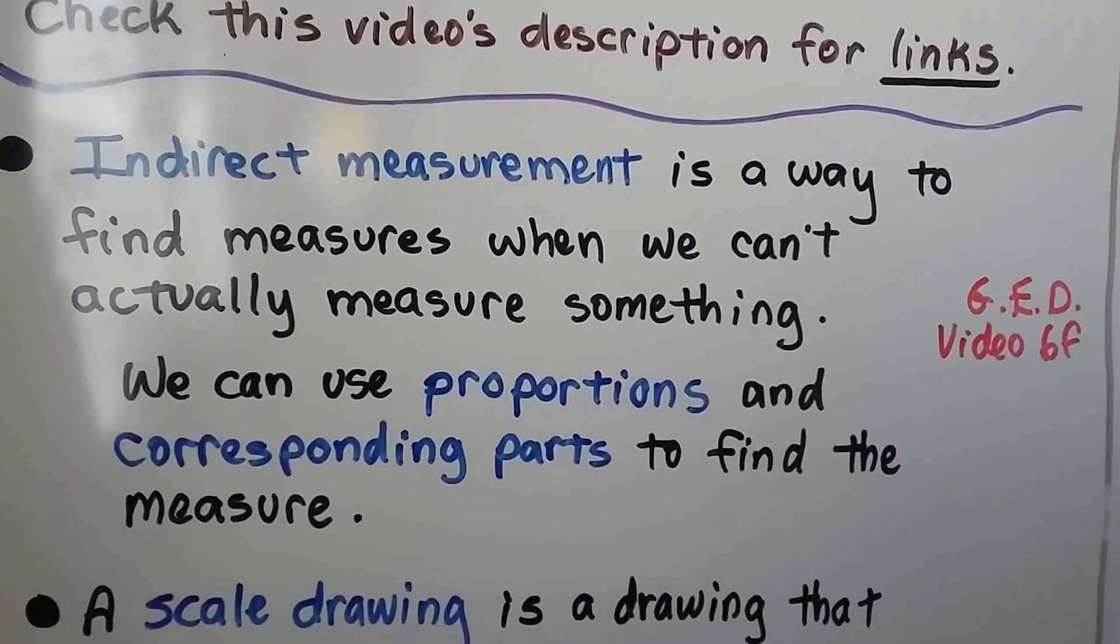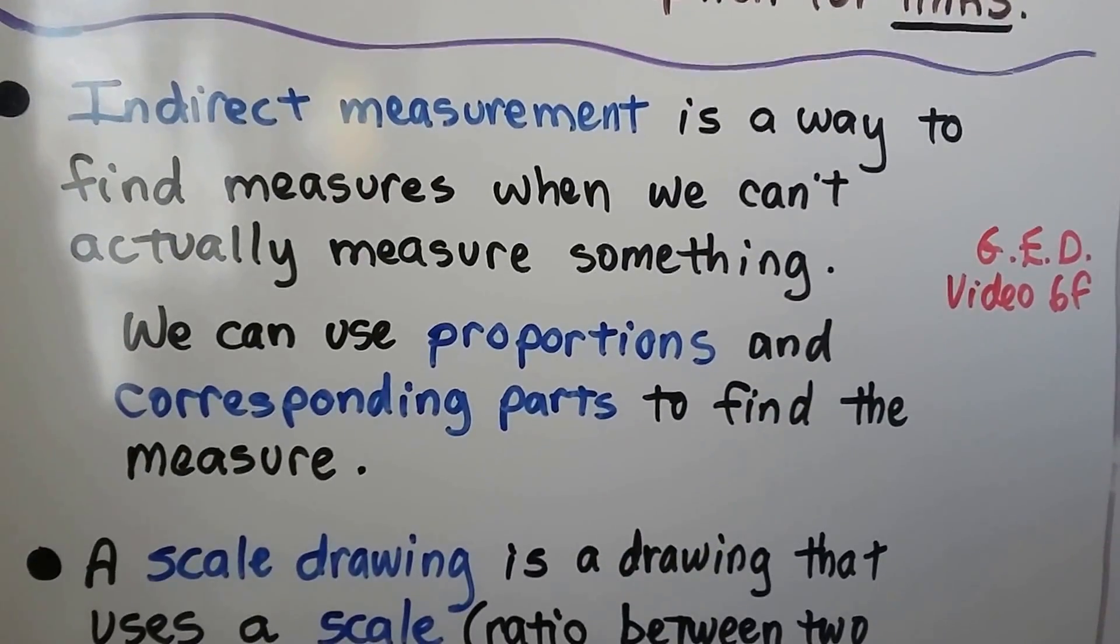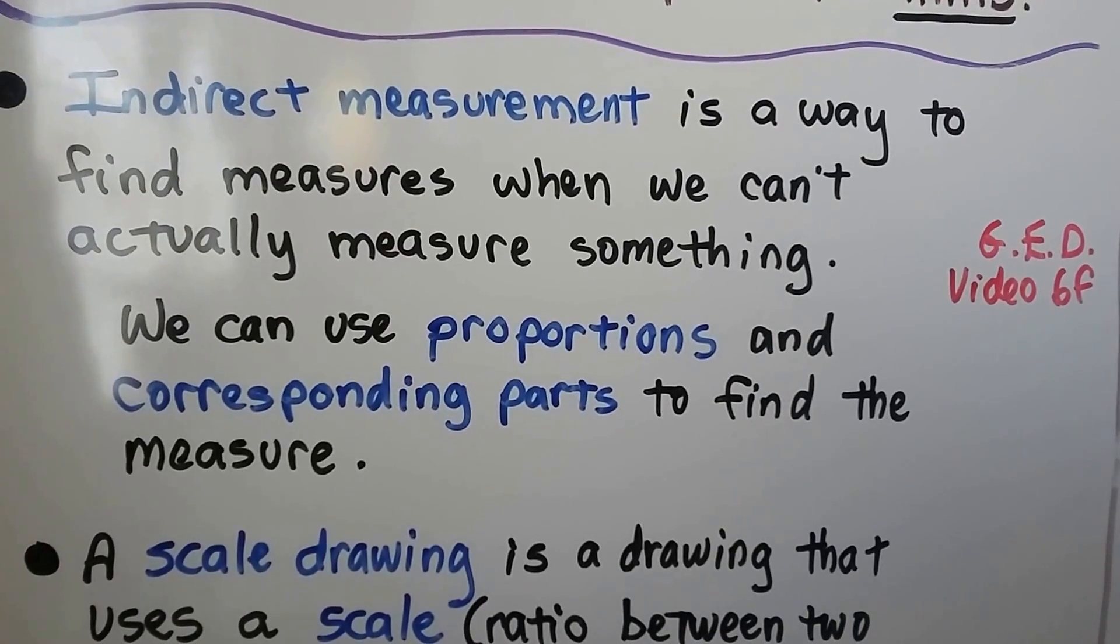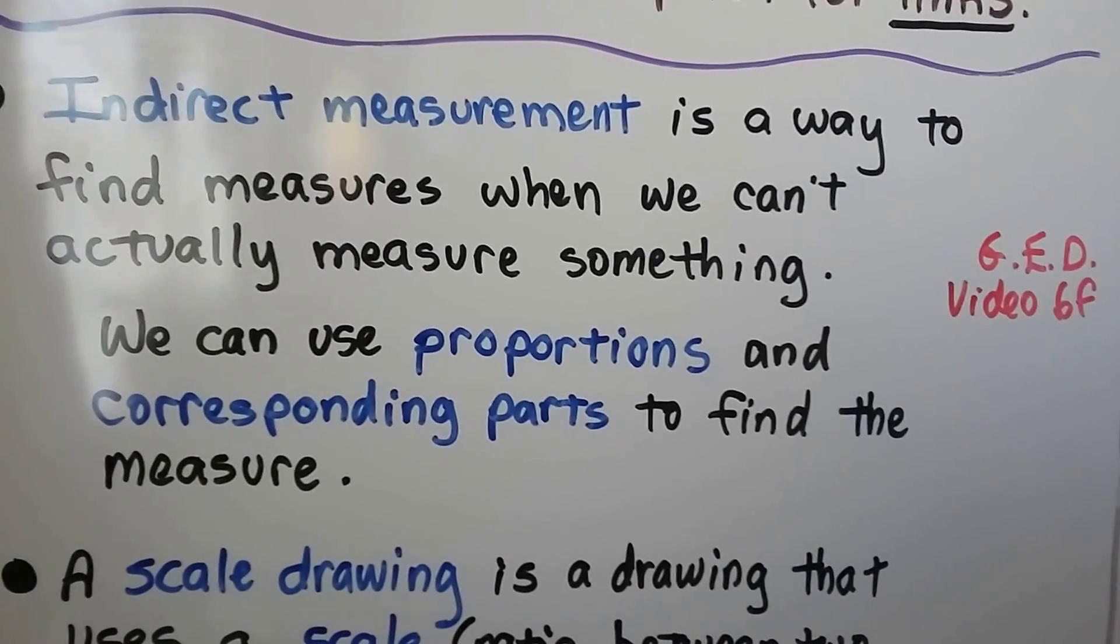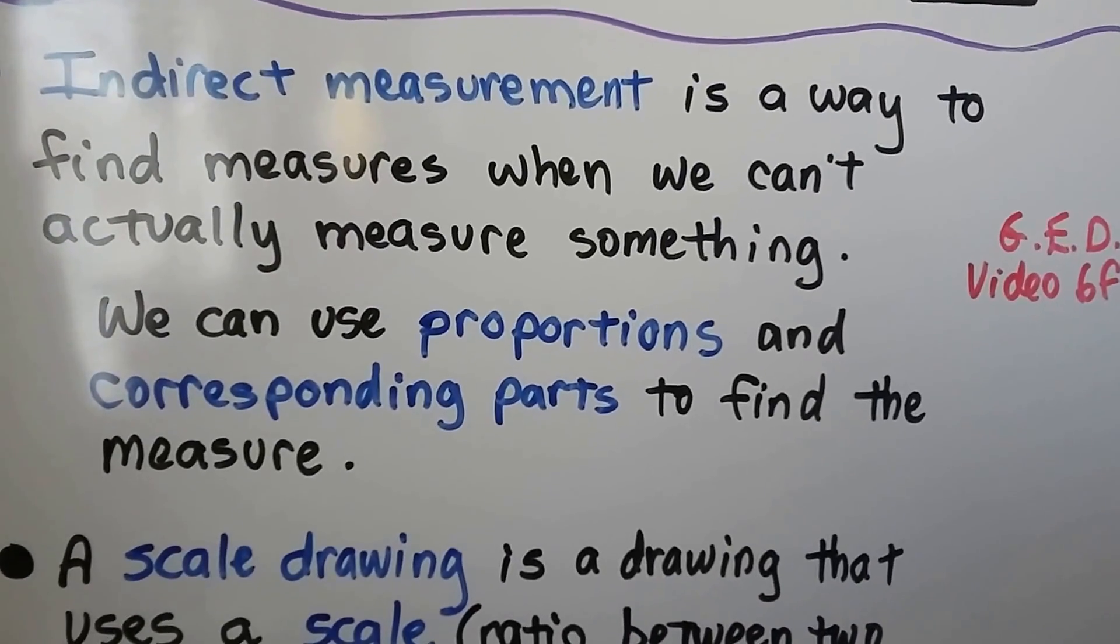Indirect measurement is a way to find measures when we can't actually measure something. We can use proportions and corresponding parts to find the measures. We learned about proportions in GED Video 6F, and that's in the description also.